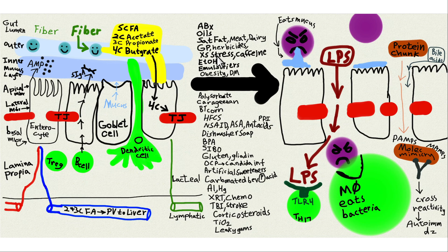Glyphosate, from non-organic herbicides commonly sprayed on soy and other crops, is associated with leaky gut. GP was originally used as an antibiotic. Excessive psychological stress can shut down your gut circulation — the splanchnic circulation — causing a mild hypoxic effect and contributing to leaky gut.